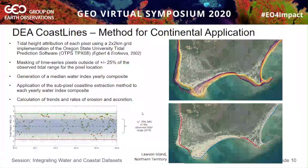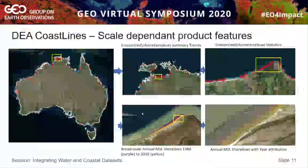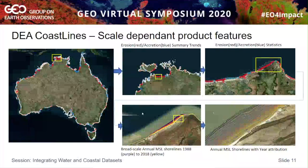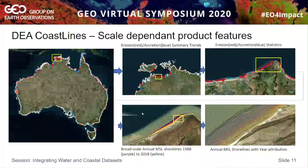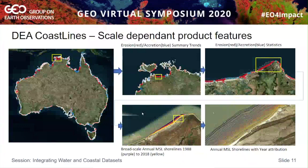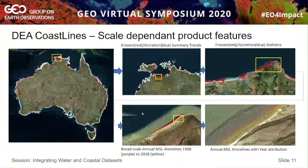We deliver these products with scale dependency so different features can be examined at different scales. At the national scale, we can view summary trends of erosion and accretion. Zooming in closer, we start seeing more statistics around rates of erosion and accretion. Zooming in further, we see shoreline trends running across 30 years from purple through to yellow. Getting very close into the dataset, we can see the yearly attribution of individual shorelines. All these datasets can be downloaded by users or accessed as web services for their own analysis purposes.